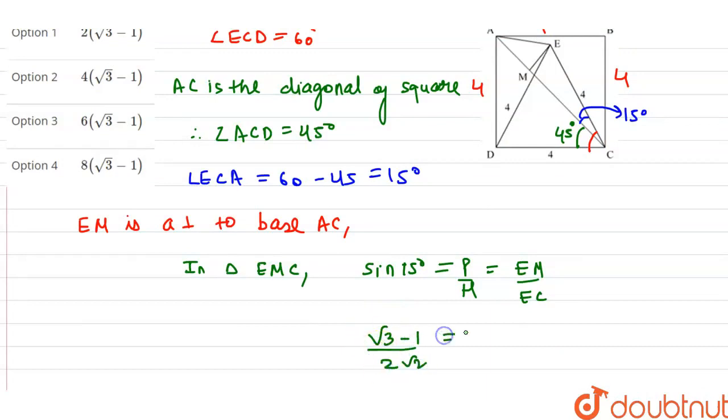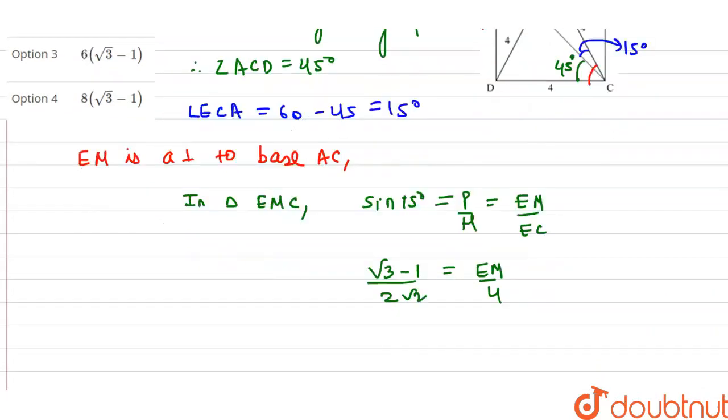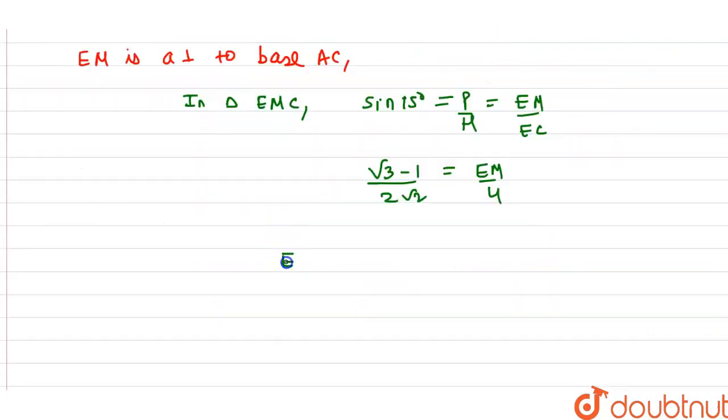Sin 15° equals EM over 4. Sin 15° is √3 - 1 over 2√2. So 4 times this gives EM equals 2√2(√3 - 1) over √2. Simplifying, EM equals 2(√3 - 1).